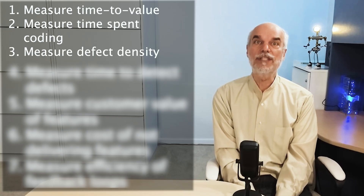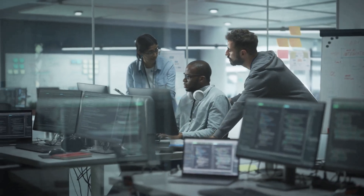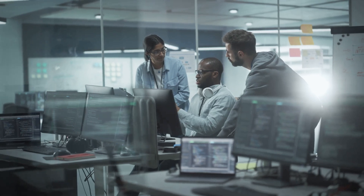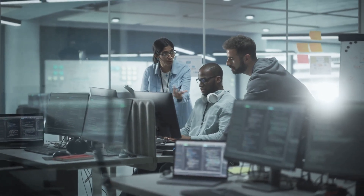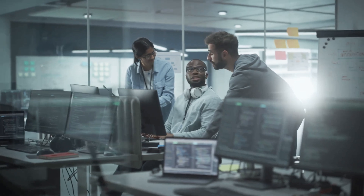Number three: measure defect density. Most organizations track bugs, but this can have an adverse effect of increasing bug tolerances. Defects in code are often a symptom of a deeper cause — a defect in the development process. If defects are constantly showing up in production code, it means the development process may be broken. Look for the root cause and try to fix it. Defect density — that is, bugs per thousand lines of code — is one of the few measures that can be compared across teams with caution, so it can be used for process calibration.